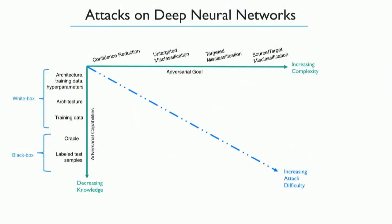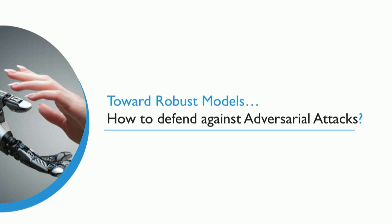It is not easy to generate an adversarial example and perform an adversarial attack. Things get more difficult when knowledge of the model decreases and complexity increases. White box attacks are easier than black box attacks, and a targeted attack is more difficult than a non-targeted one. However, adversarial attacks exist and they are a real threat to our artificial intelligence systems. How can we defend against them and make our models more robust?